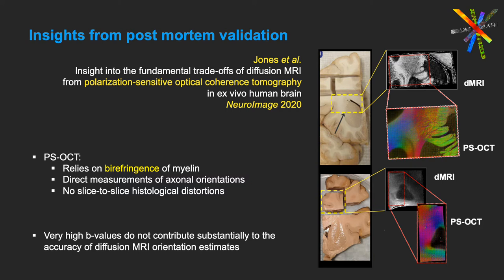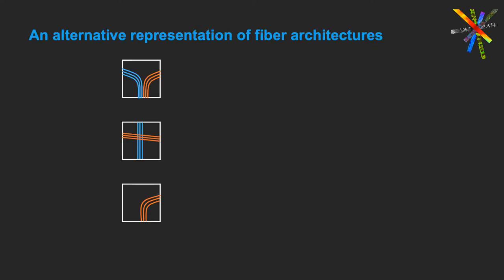The question then is: can we bypass the ODF and work directly with the diffusion signal to take full advantage of its information content? And can we use our ground-truth microscopic-scale optical imaging data not only to assess the accuracy of existing diffusion methods, but to engineer the next generation of methods? Today I will propose a path towards doing that, and I will illustrate it here in 2D without loss of generality.